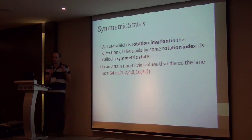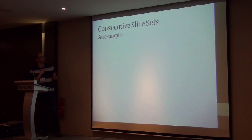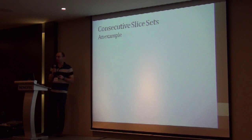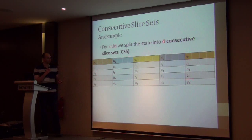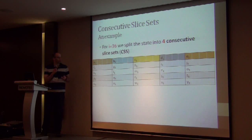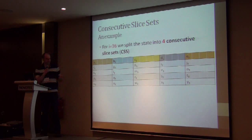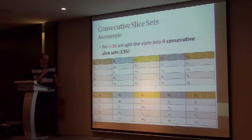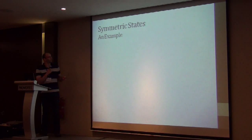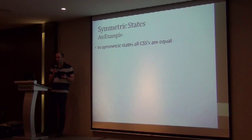To picture what symmetric states look like, we define the consecutive slice set (CSS). For example, with i equals 16, the state is split into four consecutive slice sets. The first CSS takes the first 16 bits of each lane; the second CSS takes the next 16 bits, and so forth, giving four such sets. In symmetric states, all consecutive slice sets are equal — so each 64-bit lane is composed of four repetitions of a 16-bit value, giving a large degree of symmetry.